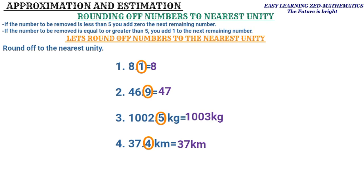This is how you round off numbers to the nearest unit. To successfully round off numbers to the nearest unit, you need to master these two rules. Thank you so much for watching — it has been Easy Learning Z Mathematics. The future is bright. God bless you, see you in the next video.